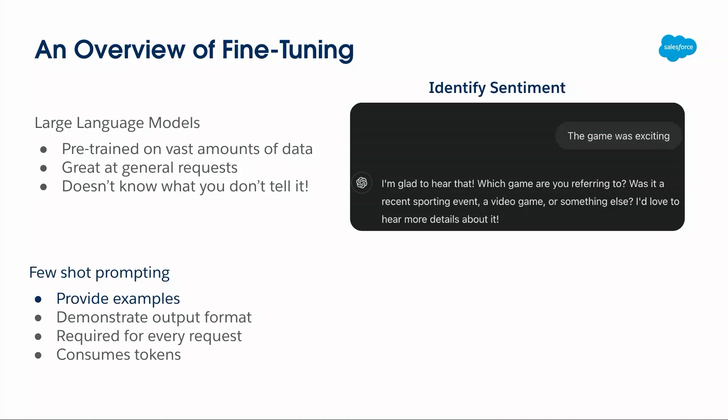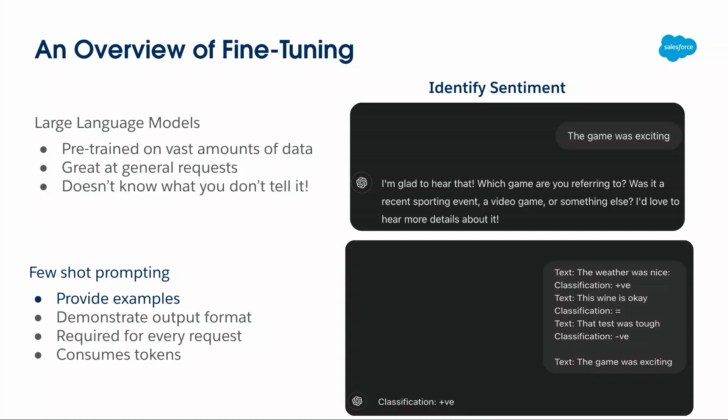So what I tend to fall back on is few-shot prompting, which is where I change the behavior of the AI by providing examples. I say, given this question, this is the response; given a different question, this is the response I want. For example, if given some text like 'the weather was nice,' return a classification of positive. 'That test was tough' is negative. So now if I say 'the game was exciting,' it immediately comes back with classification positive. But I have to do this for every single request, and it consumes tokens — it's costing me money.